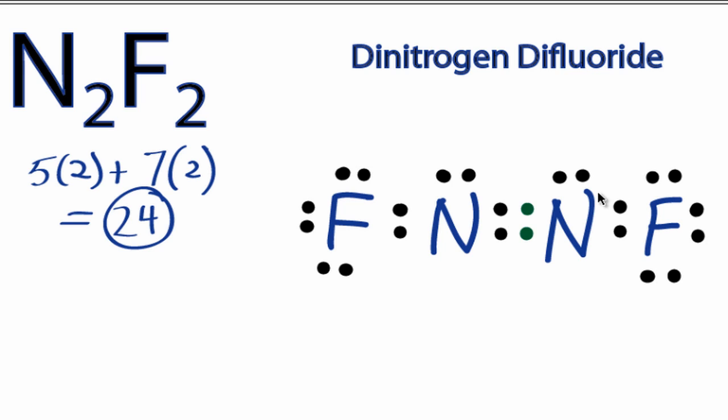We've used all 24 valence electrons that are available with the N2F2 molecule, and we've completed the octets on each of the atoms. If you check the formal charges, you'll see that they all are 0 for each of the atoms, and this is the Lewis structure for N2F2.